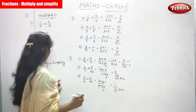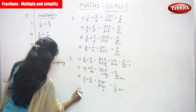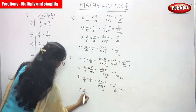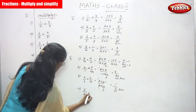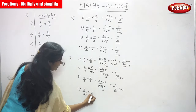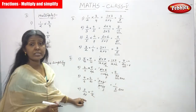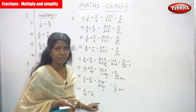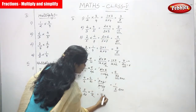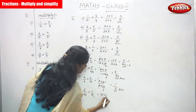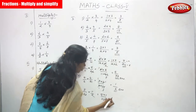The fourth sum: 5/33 multiplied by 11/2. The first is a proper fraction and the second is an improper fraction. We write it as 5 × 11 divided by 33 × 2.